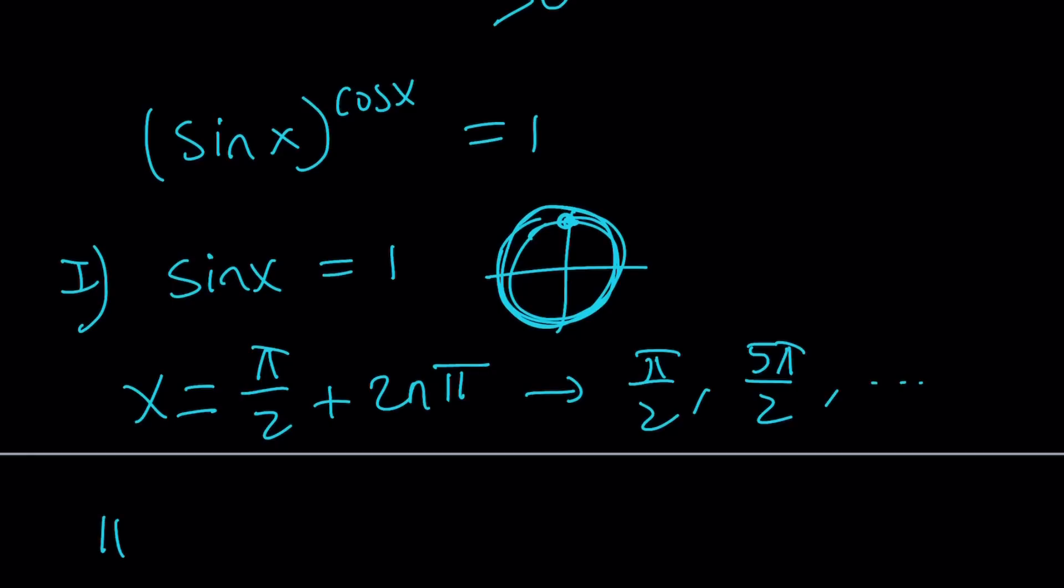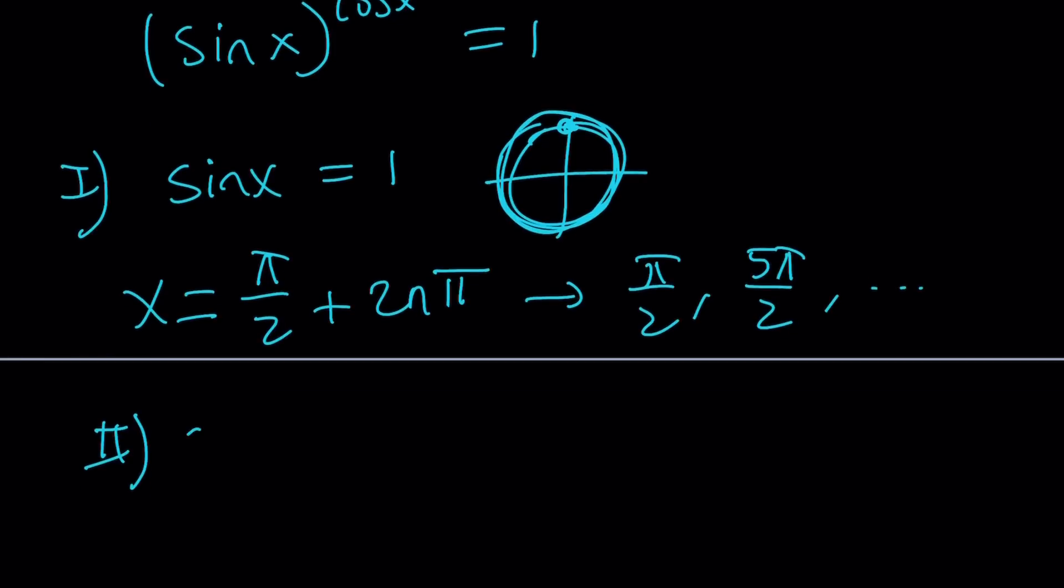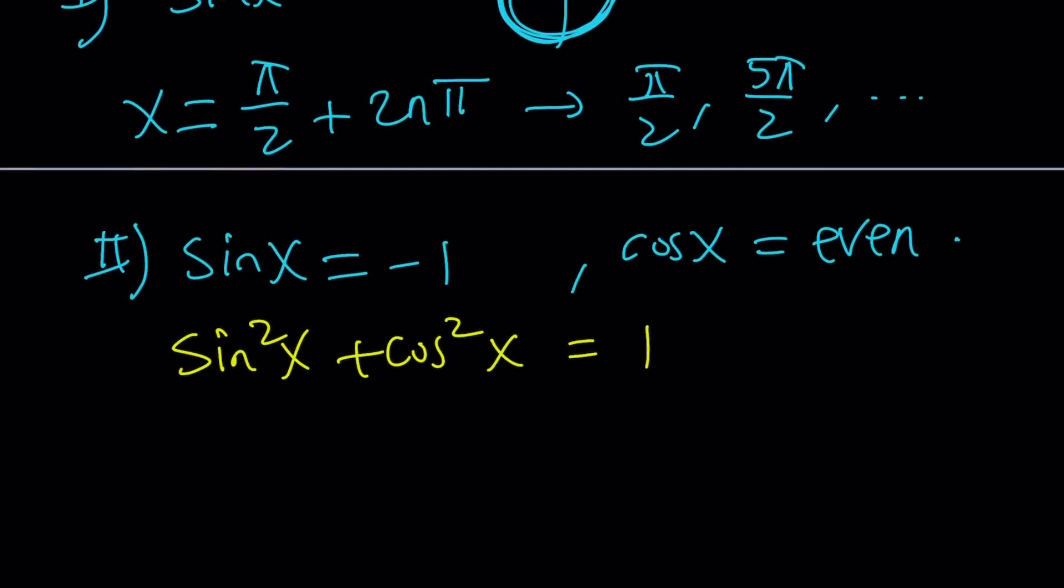Let's look at the second case. I think the second case was where sine x is negative 1, and cosine x is even, right? Well, here's one thing you should always consider. Don't forget that. This is the super-duper important formula. Sine squared x plus cosine squared x is 1. If sine is negative 1, then sine squared is going to be 1, so cosine squared is going to be 0. 0 is even, right? Some people don't believe that, but it is even, very evenly even.